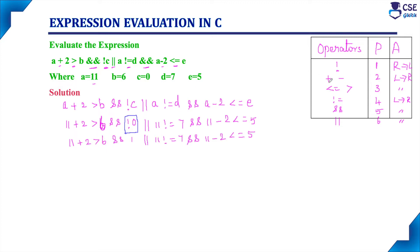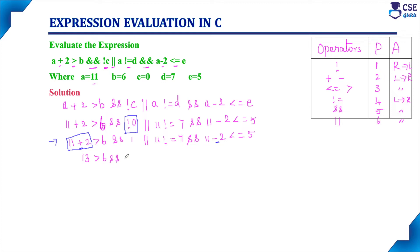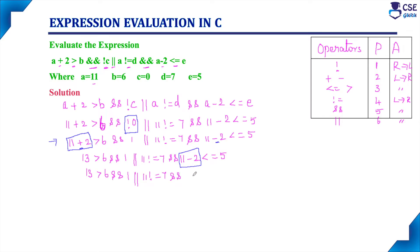Next, considering arithmetic operators — addition and subtraction — both have equal priority, so we apply associativity left to right. The leftmost operator is addition, so we evaluate 11 plus 2 first, giving 13 greater than 6. Then for subtraction, we evaluate 11 minus 2, giving 9 less than or equal to 5.